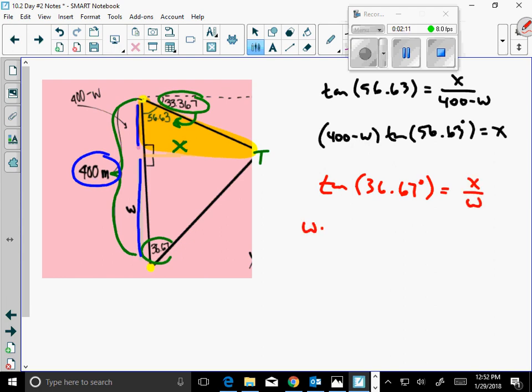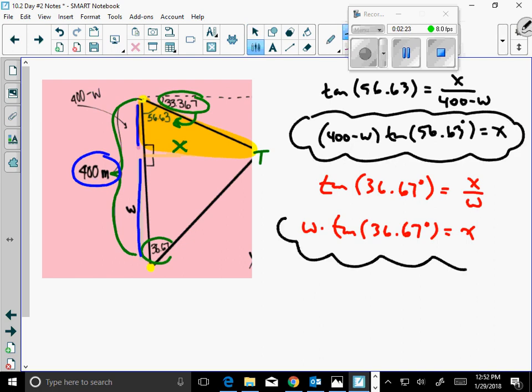Okay, so I'm going to set it up deliberately this way. You're absolutely right. Equals X over W. So therefore, W times tan 36.67 is equal to X. And now that I know what X equals, I can set those equal to each other and solve for W.